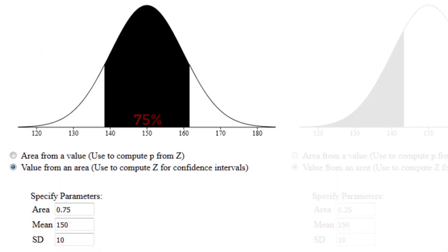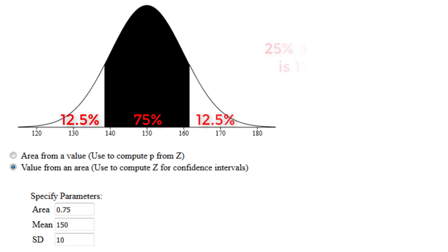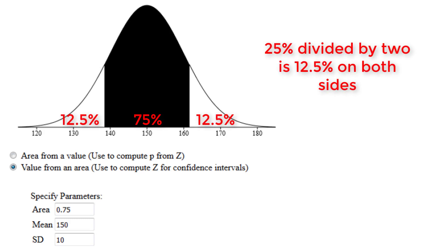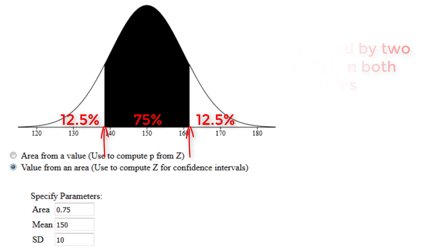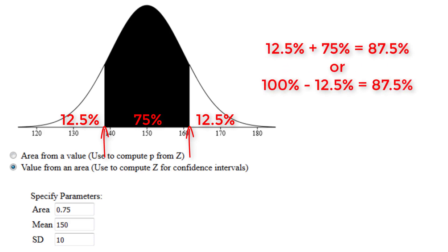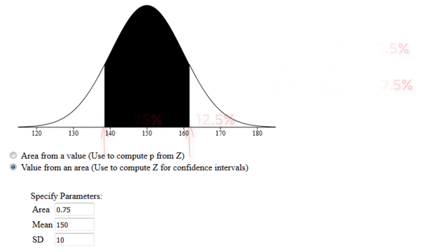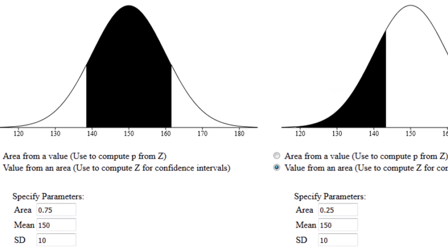This next image shows us the middle 75 percent, which also has an outer 25 percent on both sides. That means we have 12.5 percent on the lower side and 12.5 percent on the upper side. So what we're viewing here is where the 12.5th percentile and the 87.5th percentile are. This curve is also of no use to us since we're not interested in those percentiles.